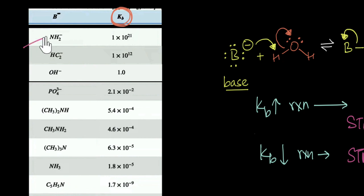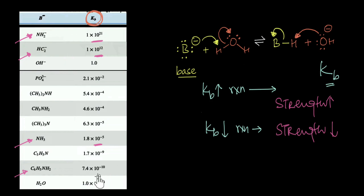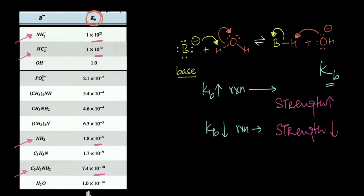If you look at our table, things like the amide ion with a KB of almost 10 to the power 21, or HC2⁻ with a KB of almost 10 to the power 12, are much stronger bases compared to something like ammonia, which has a KB of only 1.8 × 10⁻⁵, or aniline, which has an even lower KB of almost 10⁻¹⁰. Even in this table — which is not an exhaustive list — the KB values are wildly different. While amide has a KB of 10²¹, water has a KB of 10⁻¹⁴, a difference of almost 10³⁵.